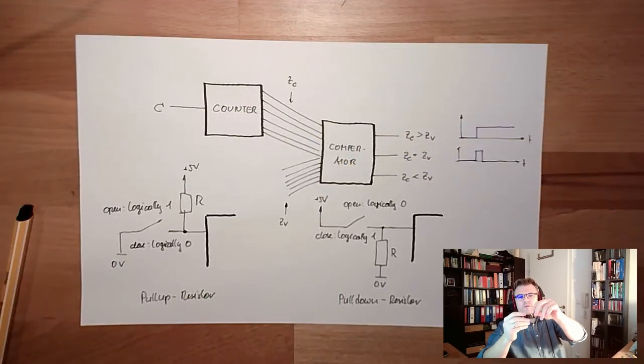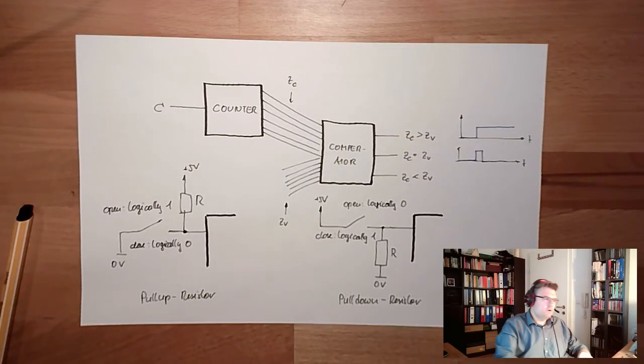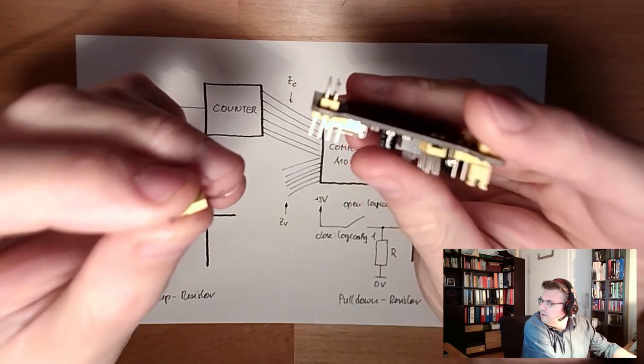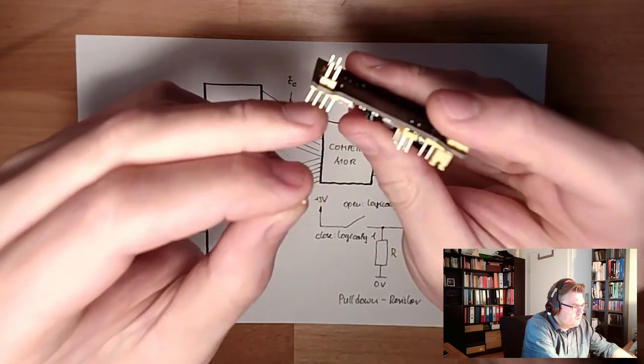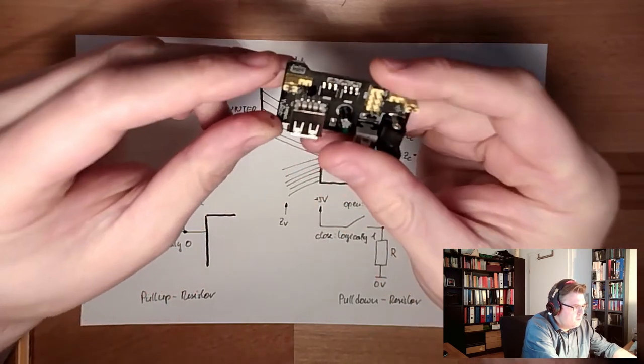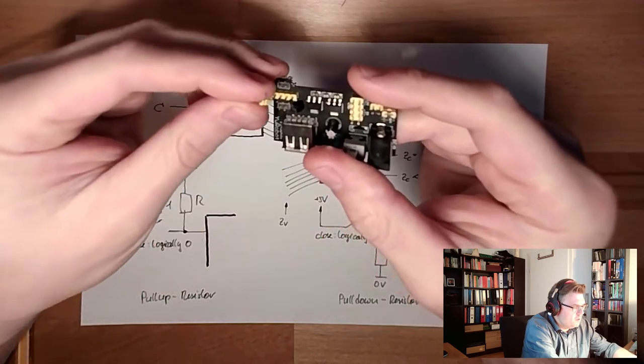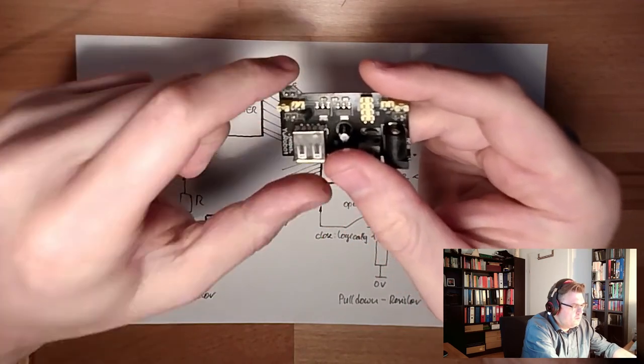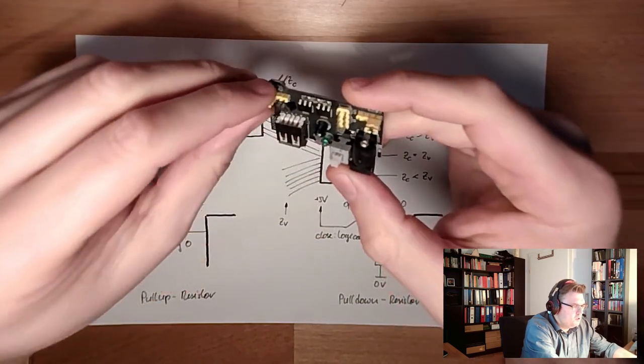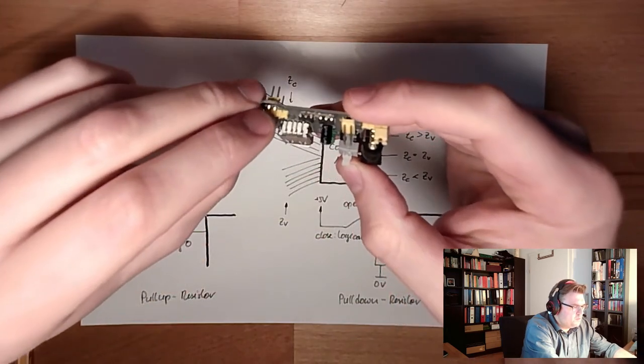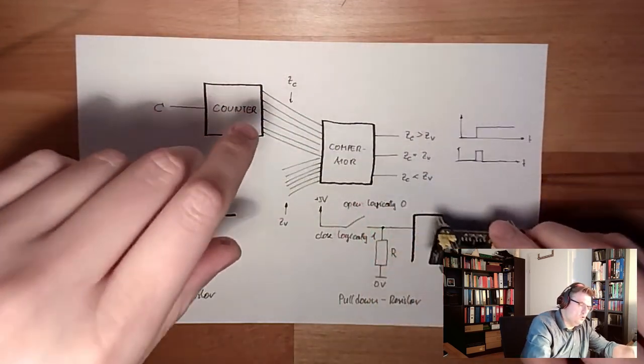Or you do it like this. I'll show you here. Jumper. Two connectors. Join them. Easier than a DIP switch. Simpler than a DIP switch. But also as big as a DIP switch. This would also be a possibility. Jumper wire.